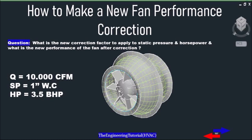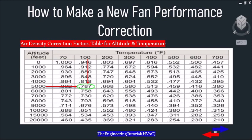But after installation, the fan is operating above standard conditions at an altitude of 5,000 feet above sea level and a temperature of 100 degrees Fahrenheit. So what is the new correction factor to apply to the static pressure and horsepower, and what is the new performance of the fan after correction? As you can see, this is an air density correction factors table for altitude and temperature.